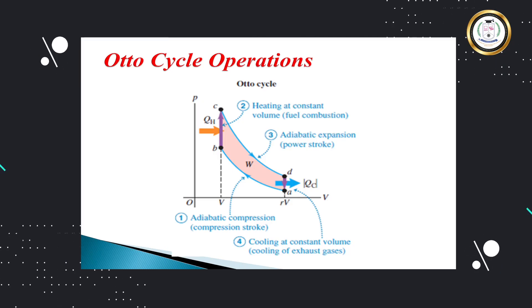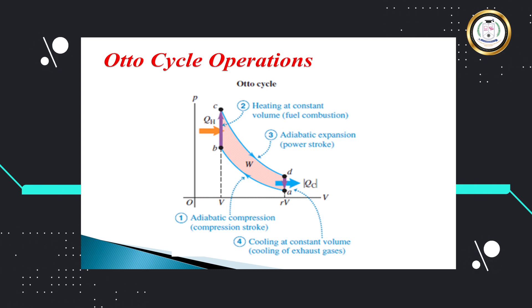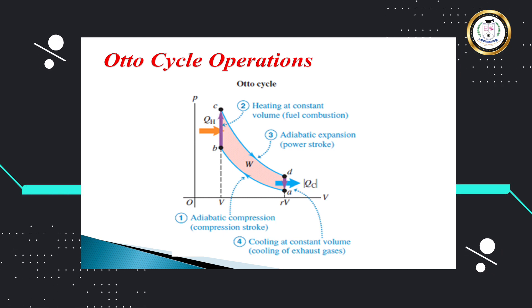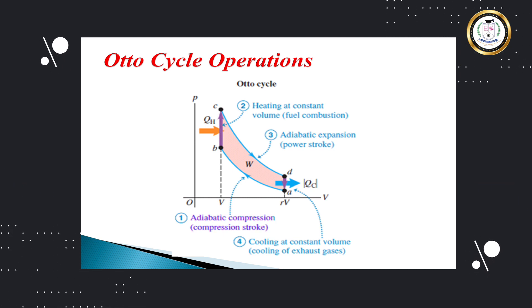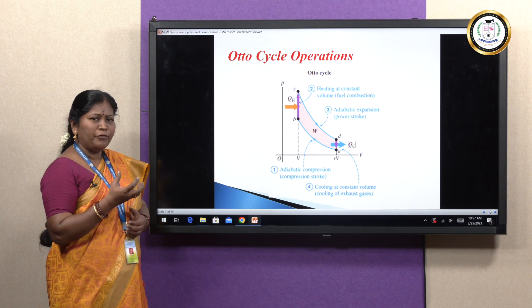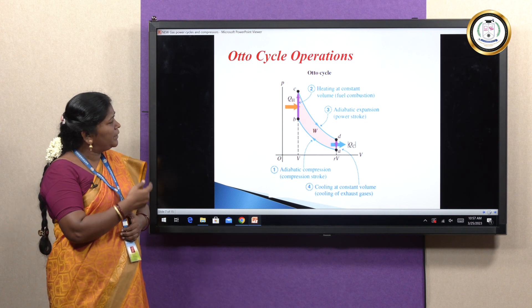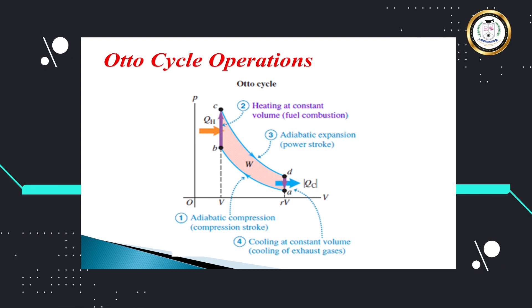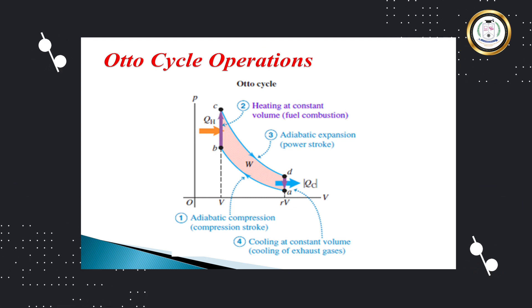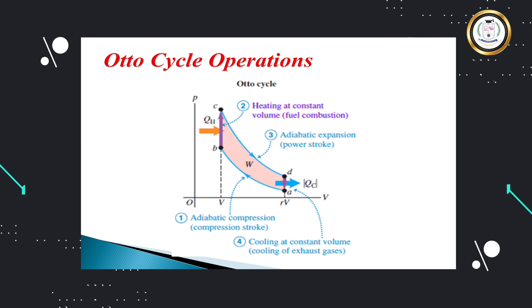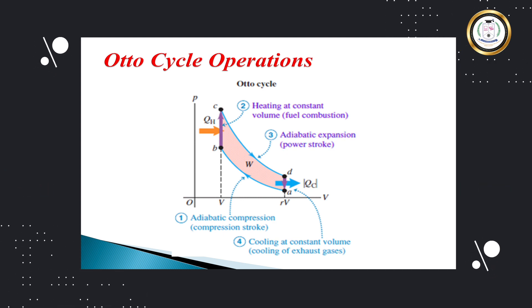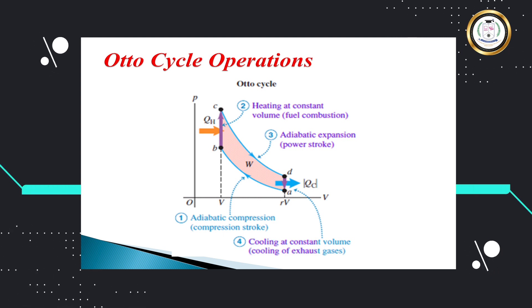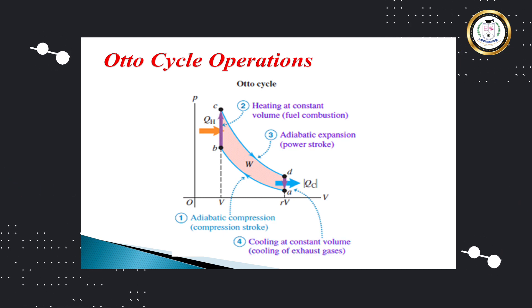Now, the processes in the Otto cycle — totally four processes are involved. A to B is adiabatic compression, during which the air-fuel mixture is sucked and compressed. B to C is heat supplied at constant volume. C to D is adiabatic expansion, which we call the power stroke. And D to A is heat rejected at constant volume, which is the exhaust stroke. Based on these thermodynamic processes and cycle of operation, the Otto cycle is completed.